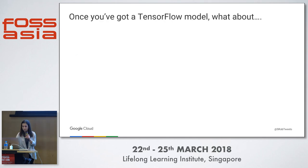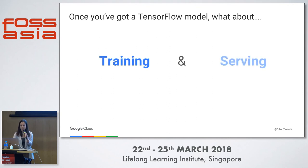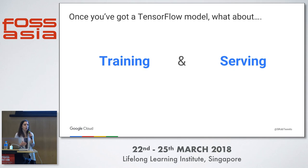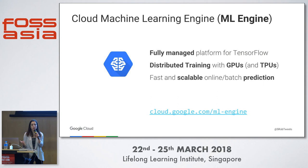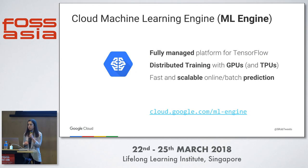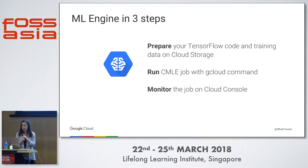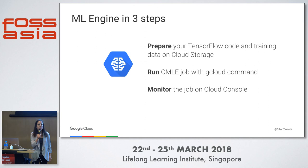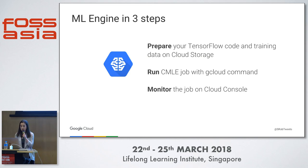Once you've built your TensorFlow model, you need to think about how you're going to train and serve it. One reason machine learning has only caught on in the last couple of years is that training is very computationally expensive — we've only recently seen the hardware capable of doing it. Cloud Machine Learning Engine is our managed service for TensorFlow on Google Cloud Platform. It lets you do distributed training with GPUs and now TPUs. Once your model is trained, you can deploy it on ML Engine for serving and get access to a scalable online or batch prediction API. There are three steps: write your TensorFlow code locally, put your model code and data into Google Cloud Storage, and use the gcloud command-line interface to kick off your training and evaluation job, then monitor it on the Cloud Console.